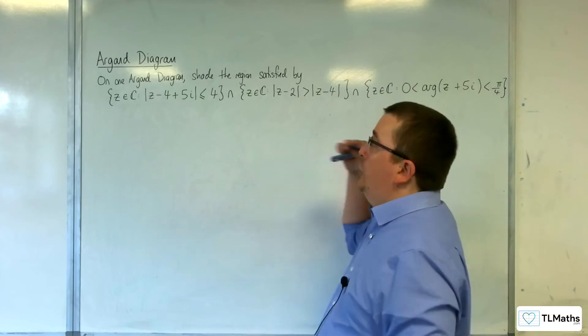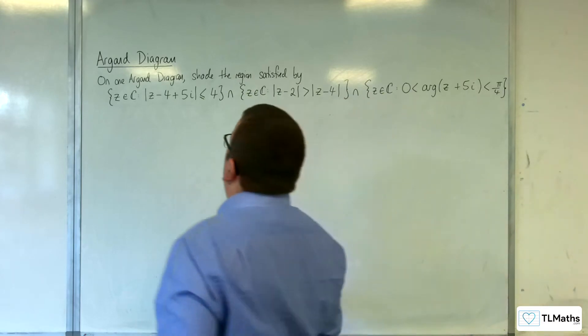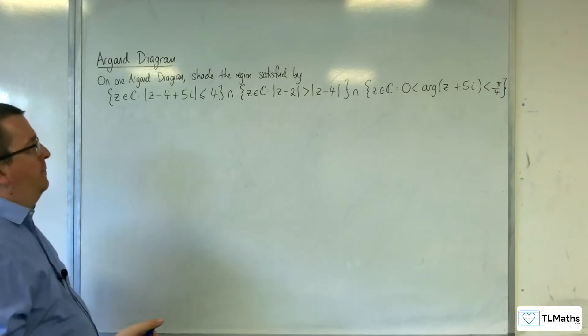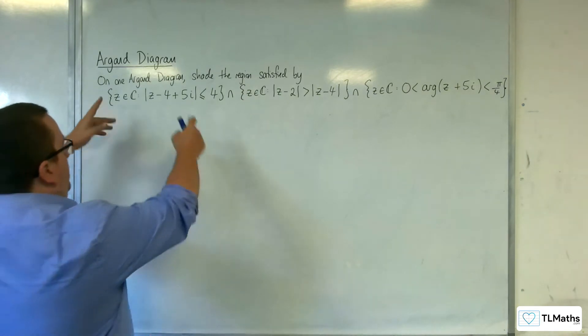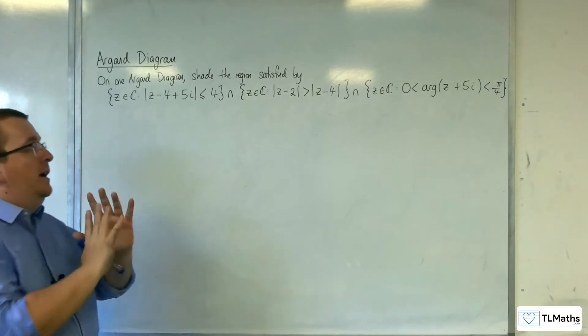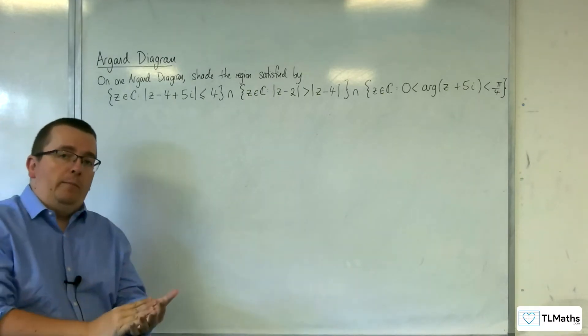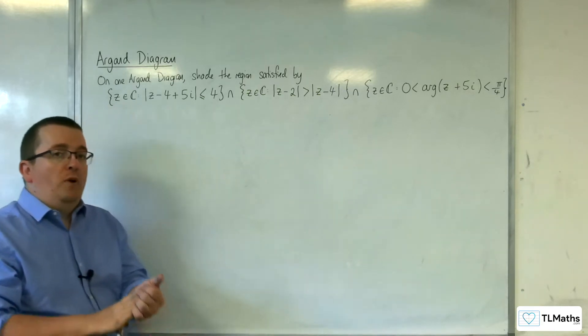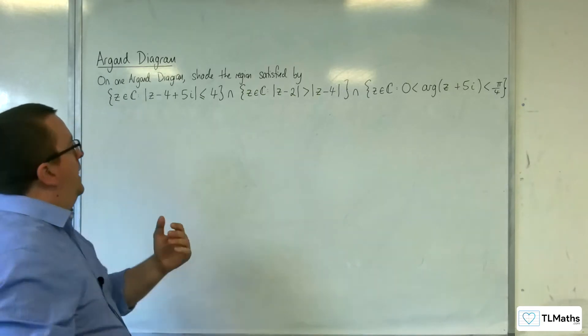In this video, we're going to be looking at shading one region, but it's satisfied by three bits of information. Now, this spans the length of the board, and so could look absolutely horrific. But if you take it step by step, it won't actually be too bad. It's just bringing all the ideas together.